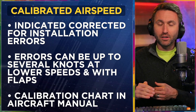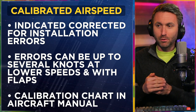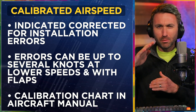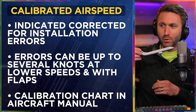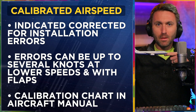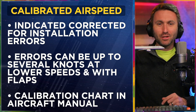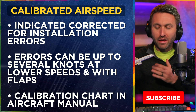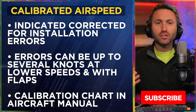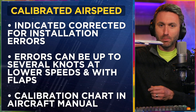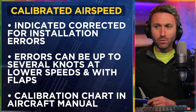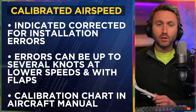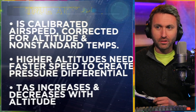Building on that is calibrated airspeed. This is indicated airspeed corrected for installation errors. Errors can be up to several knots with lower speeds and with flaps. Think about the positioning of the aircraft — I'm really bringing out the 737 model here. If the pitot tube is parallel to the body and fuselage of the aircraft, think about when it's in slower flight or with a more nose-up attitude. The installation error of the physical pitot tube and where it's pointing is going to be off a little bit. There's a calibration chart that can be found in the aircraft manual.